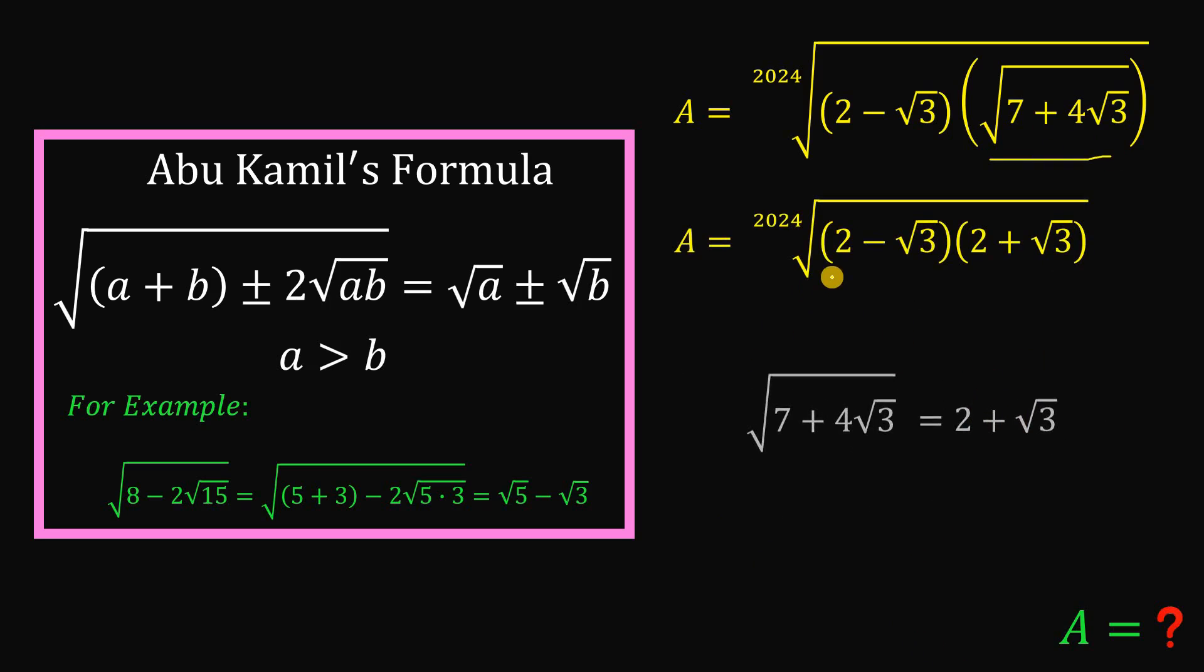Now at this point, what we're going to do is to multiply this expression inside the 2024th root. So this is just a difference of two squares. So when we multiply this, we get something like 2024 root of 2 squared minus square root of 3 raised to the power of 2. And 2 squared is 4. Square root of 3 squared is 3. 4 minus 3 is 1. And 2024 root of 1 is simply equivalent to 1.